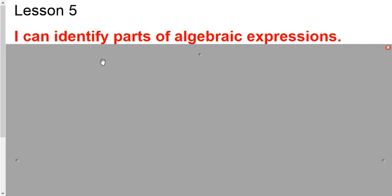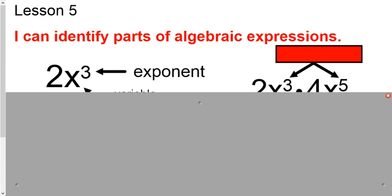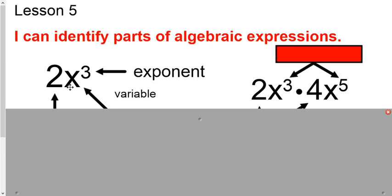Right here we have basically an algebraic expression, 2x to the third power. We know this is an exponent. We know this is a variable. But what about this 2? What do we call that?